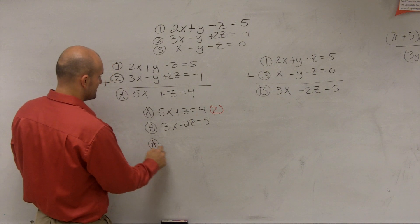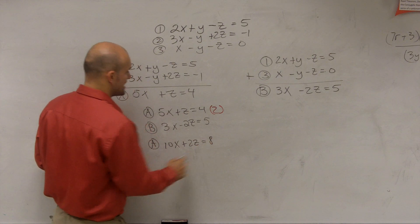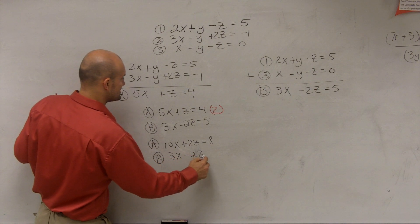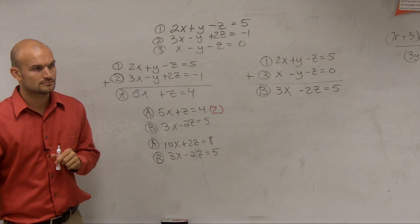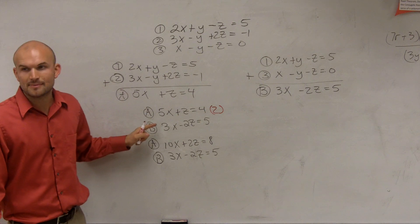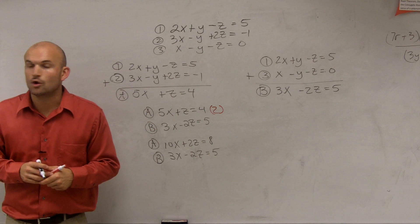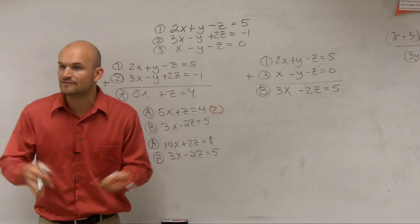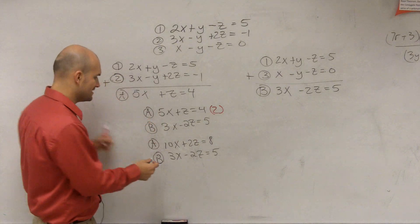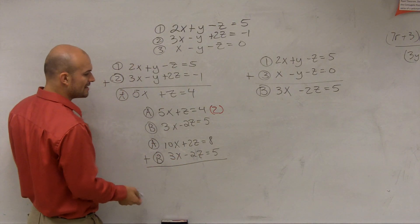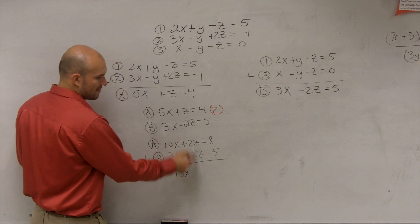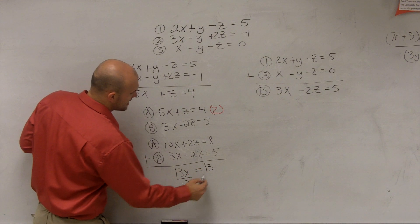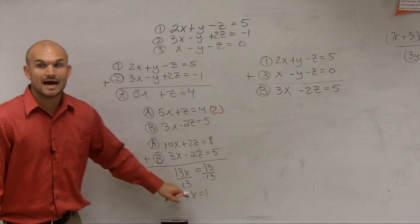So multiplying equation A by 2, the new A becomes 10x plus 2z equals 8. Equation B remains 3x minus 2z equals 5. Now I have the same coefficient for z — one positive, one negative — so I add them. Since one's positive and one's negative, adding eliminates z. 10x plus 3x is 13x, z goes to zero, and the right side gives 13. Dividing by 13, x equals 1.